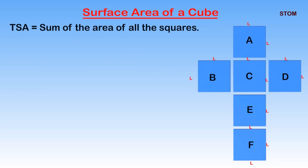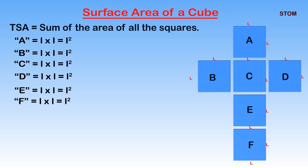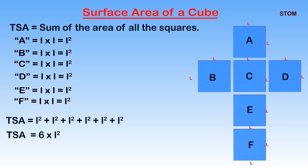The surface area of a cube will be the sum of the area of all the squares — that is, squares A through F. All the areas of each square, when summed up, will give us the surface area of a cube, which can be simplified as six multiplied by L squared, which is the same as 6L squared.